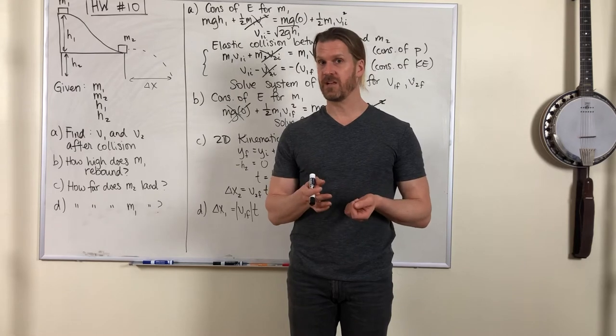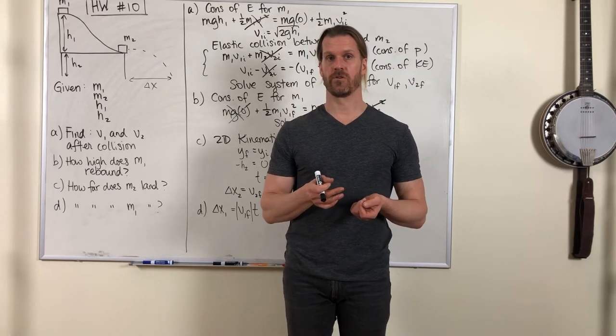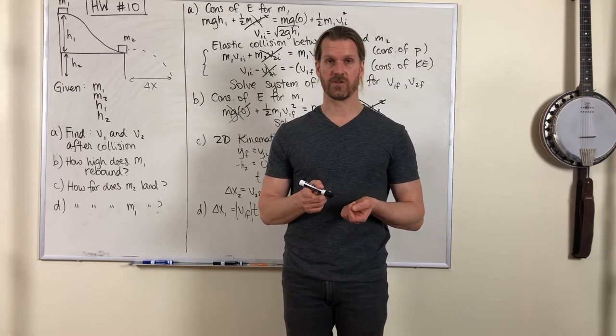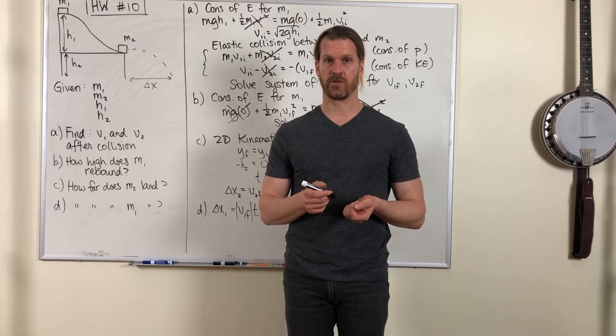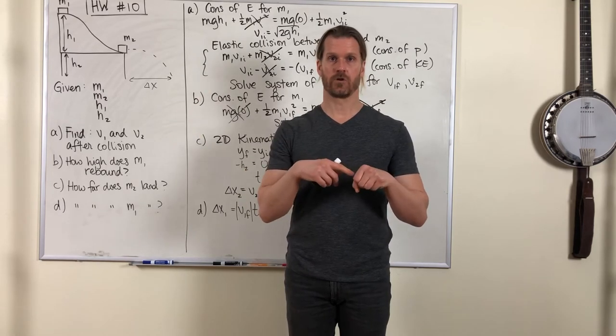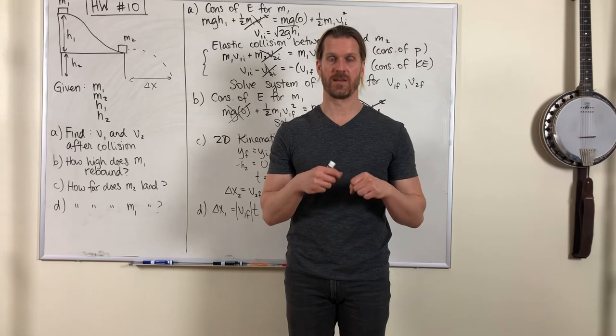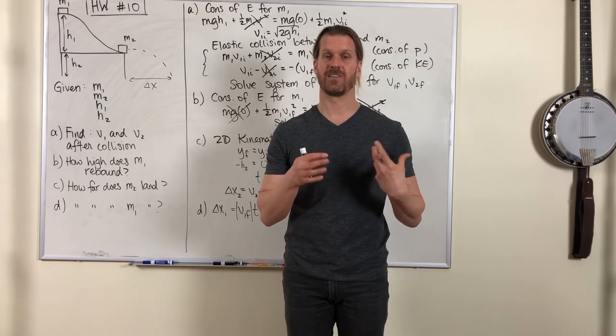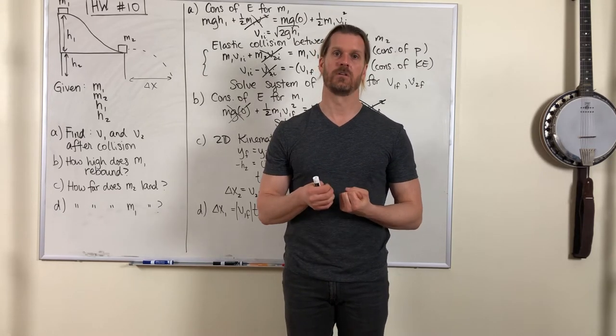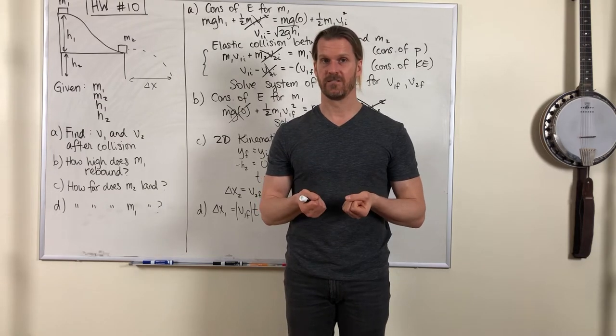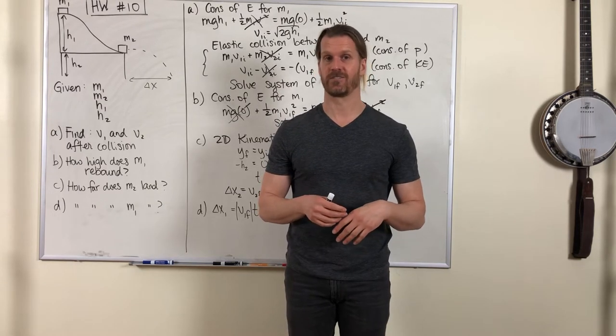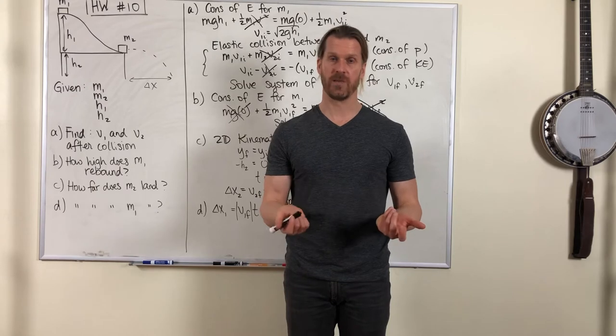So in the ballistic pendulum problem there are two stages. The first stage is where the bullet collides with the block and gets embedded inside. That is the inelastic collision part and in that inelastic collision energy is definitely not conserved but momentum is.